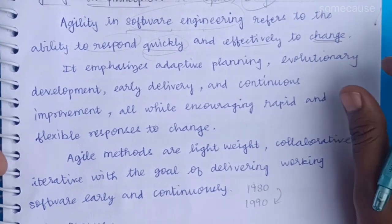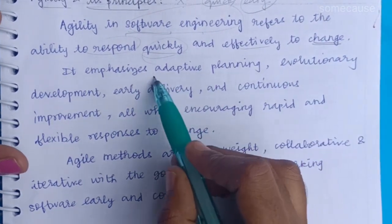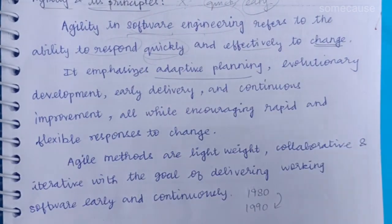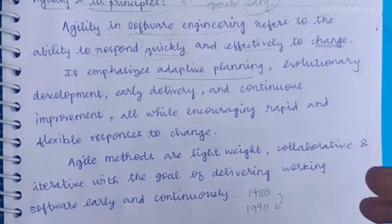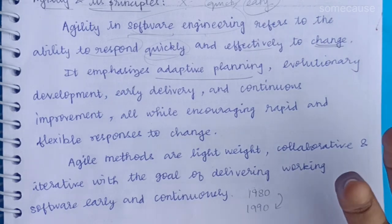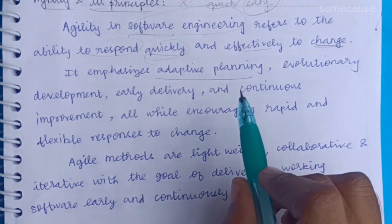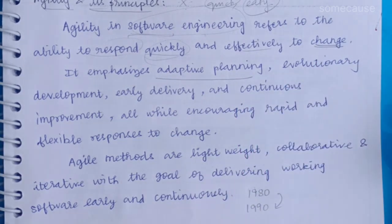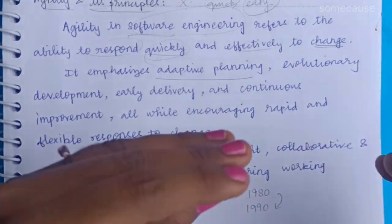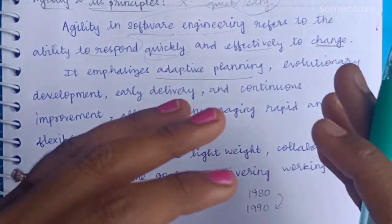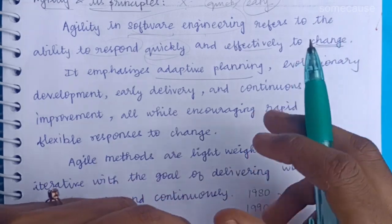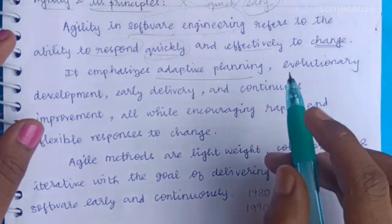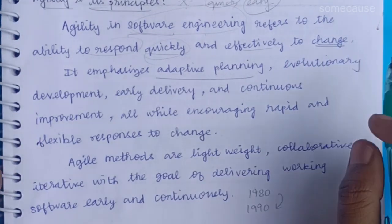Agility means adaptive planning. We are going to do a project, a software, so we are going to do adaptive planning. What changes are happening? We are going to do adaptive planning. That is the main thing.